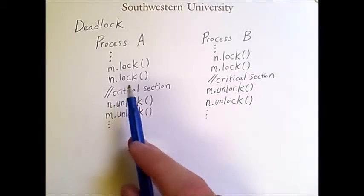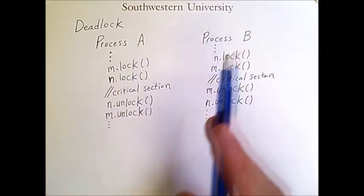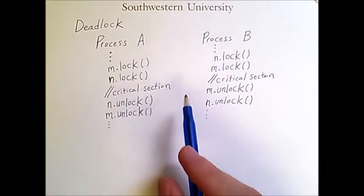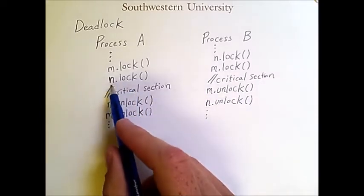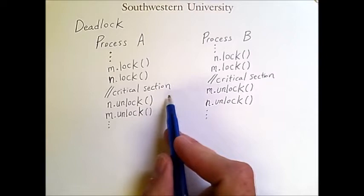Here we have two separate processes, A and B, and each of them need to lock a mutex M and another mutex N before they can perform their critical section.